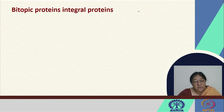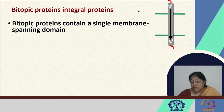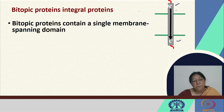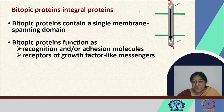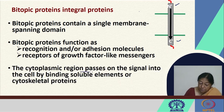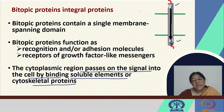Bitopic proteins are integral proteins that contain a single membrane-spanning domain, with the N-terminal on one side and the C-terminal on the other side. They can function as recognition or adhesion molecules and as receptors for growth factor-like messengers. The cytoplasmic region passes on the signal into the cell by binding soluble elements or cytoskeletal proteins, transferring the signal through other molecules to the specific target location.